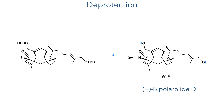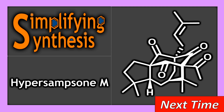With the alkene now in place, all that remained was to remove the silyl groups. These were deprotected in a 96% yield with HF, completing the synthesis of Bipolaride D. If you enjoyed this synthesis, join me in the next video, where we will look at the total synthesis of Hyperforin M.